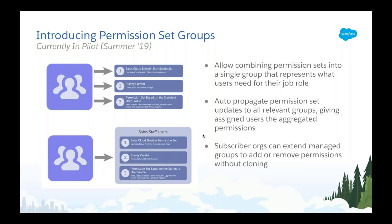A common complaint I hear from admins using permission sets is that they can get very granular, with no intermediate state where you can identify that a group of users requires a particular combination of permission sets for their daily jobs and assign them all at once. With this grouping mechanism, we want to relieve that painful process by allowing you to combine different permission sets into a single group for easier assignment. Whenever you have updates in your permission sets, the platform will propagate all changes to the permission set groups that contain them.